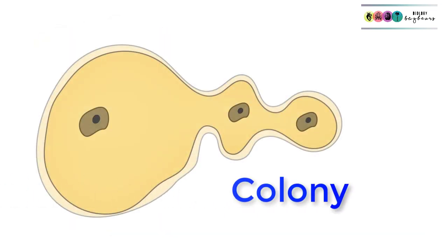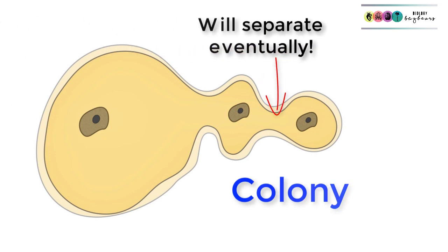Sometimes though the cytoplasm doesn't separate and you get this structure known as a colony. A colony forms when the bud, its nucleus, undergoes mitosis and the process of budding continues.